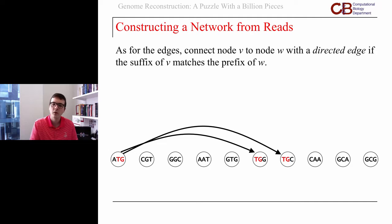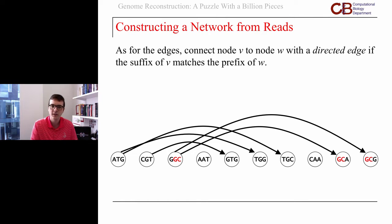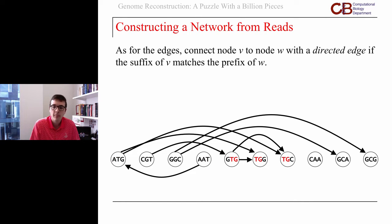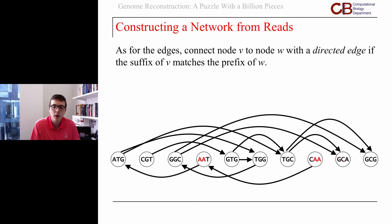I've highlighted that overlap as TG. We can just go through the network and say at each node what does it overlap with. CGT, for example, needs to overlap with only GTG, so we connect those two with an edge. And GGC connects to GCA and GCG. You'll notice these are directed edges — the reverse overlap is not necessarily true. At each stage, we just look for which nodes have prefixes matching the current suffix, and in this way we wind up constructing our network.